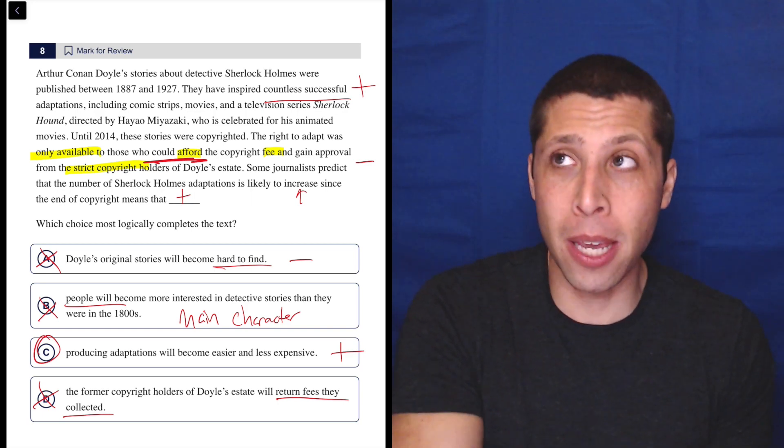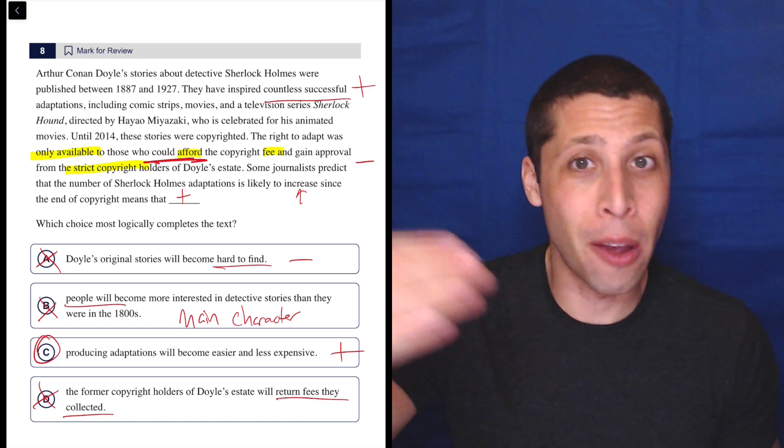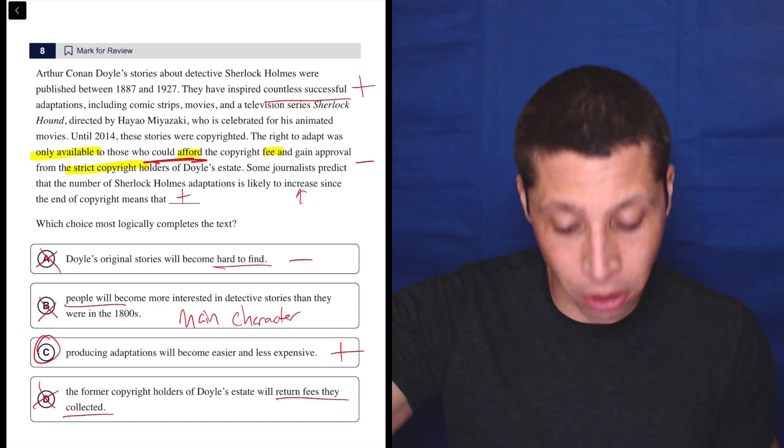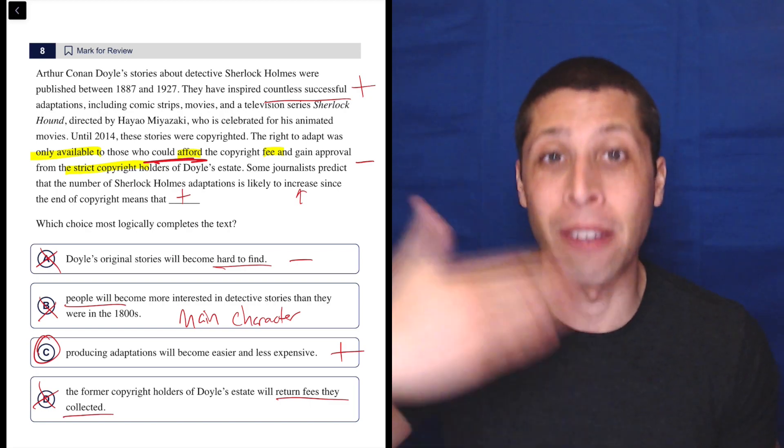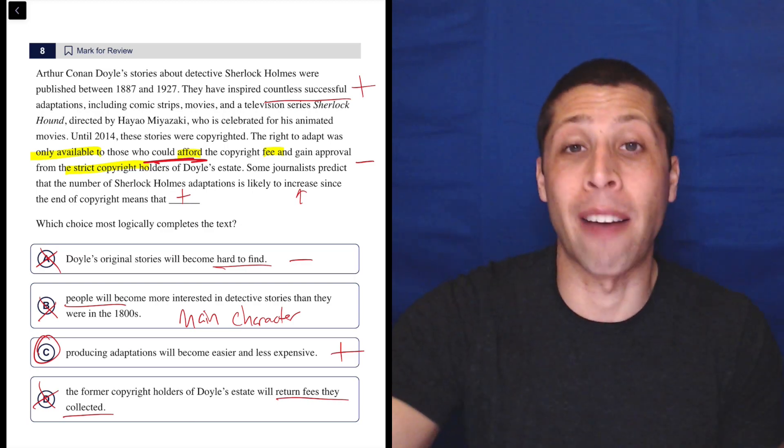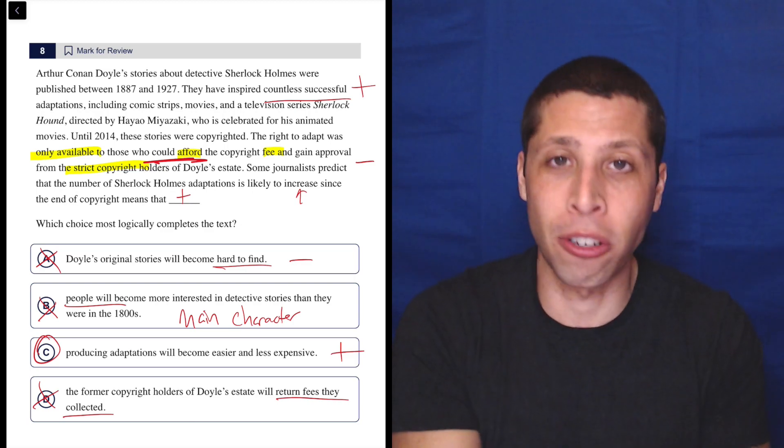predict what the blank is going to be because the logic of the passage is pretty straightforward. They were expensive. They were under strict copyright. The copyright is gone. Therefore, they're no longer going to be expensive. They're no longer going to have strict copyright laws. So we're going to have more of these things. Just follow it to its logical conclusion. A lot of times, that's just going to be what the answer choice says.